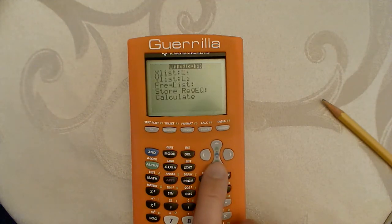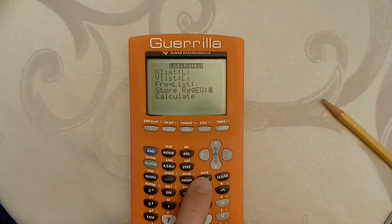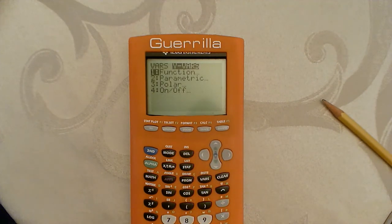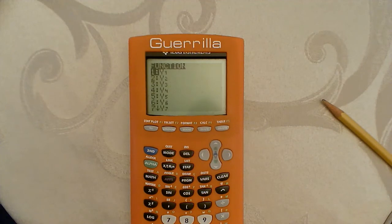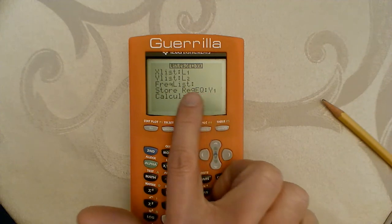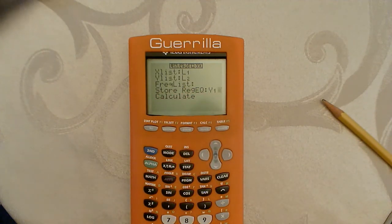We select that, we have list 1 and list 2. Remember if we want to store the equation so that we can graph it, we want to find the vars. Hit the vars button, go over to y vars, select function, and then y1, it will paste it in right where we wanted it. Y1 gets pasted, so it will store the regression equation in y1. We then calculate.